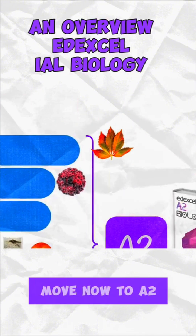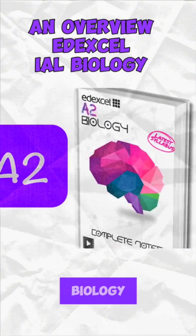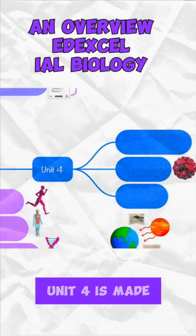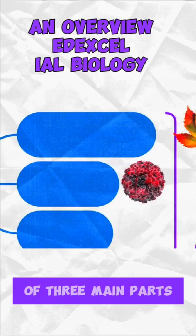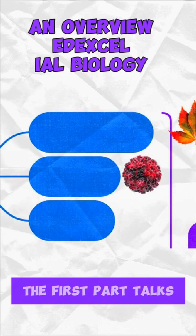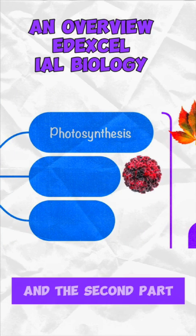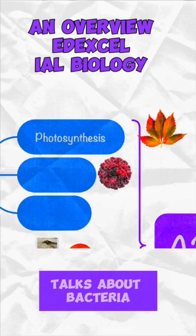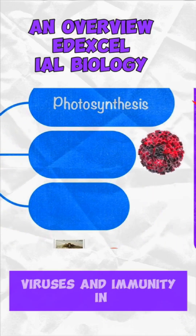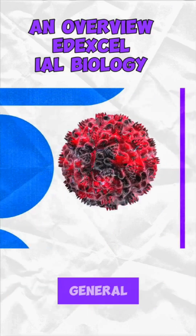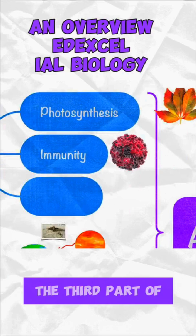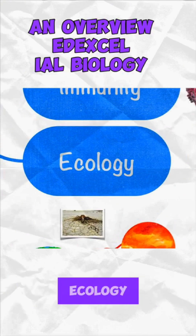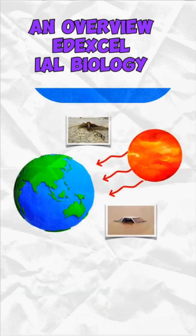Moving now to A2 biology, which is also made of three units. Unit 4 is made up of three main parts. The first part talks about photosynthesis, the second part talks about bacteria, viruses and immunity in general, and the third part talks about ecology and global warming.